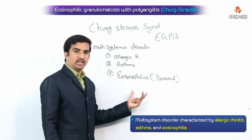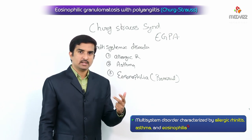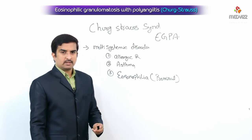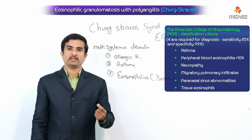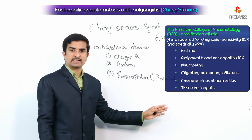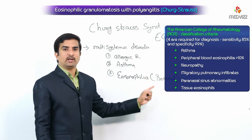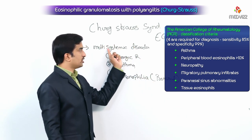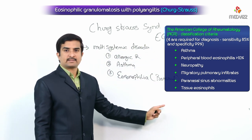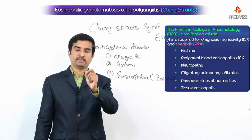If you find these three important findings, we can conclude that it is Churg-Strauss syndrome. But the latest guidelines from the American College of Rheumatology provide six classification criteria, out of which four are required for the diagnosis. This table has a sensitivity of 85 percent and specificity of 99 percent.